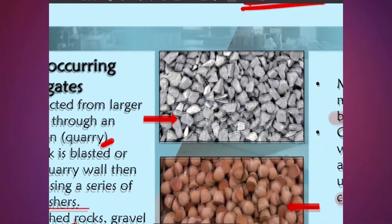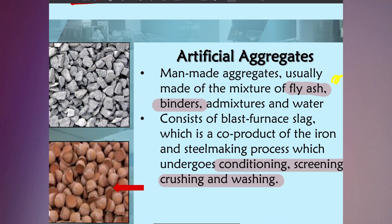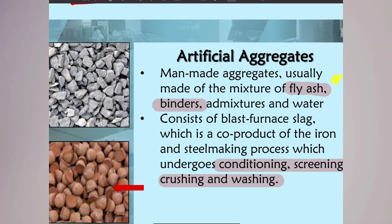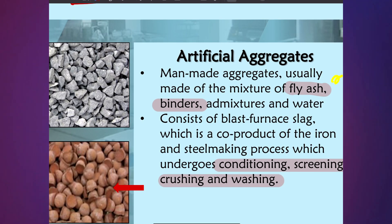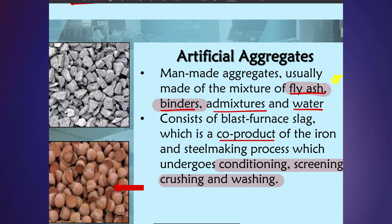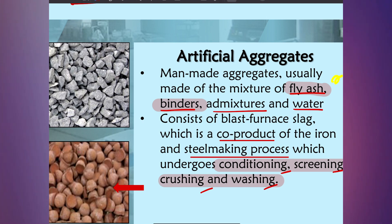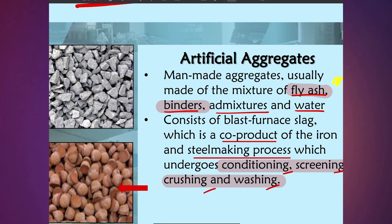As for artificial aggregates, which are man-made aggregates, they are usually made of a mixture of fly ash, binders, admixtures and also water. This includes blast furnace slag, which is a co-product of the iron and steel making process, and undergoes conditioning, screening, crushing and washing.